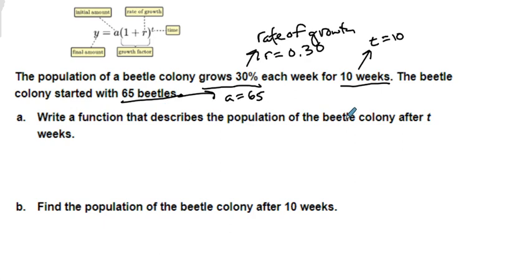Now if we're going to write a function that describes the population of the beetle colony after t weeks, they're saying what is the general case of this particular function. So it is y equals, we're going to use 65 for my a, and then it's 1 plus, well my r is 0.3, so 0.3. I'm not going to include the 0 after because it's really not important. And then my t.